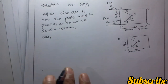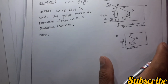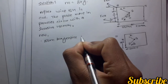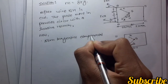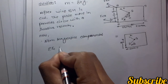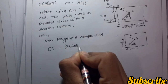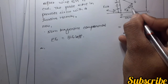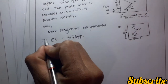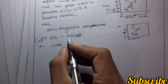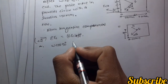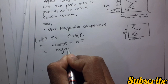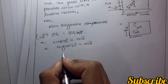From the tangential component equation: summation of Ft equals summation of Ft effective. Taking the positive direction, w cos 30 degrees is equal to m × a_t (tangential acceleration). This gives us the tangential equation of motion.